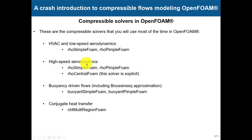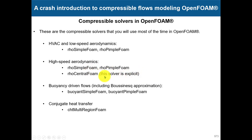For high-speed aerodynamics you use the same solvers, but with a small correction to account for high-speed effects — we will see that. There is also the solver rhoCentralFoam, which is the only explicit solver in OpenFOAM. Be careful: it has a constraint that the maximum CFL number cannot exceed one. We will focus on implicit solvers.